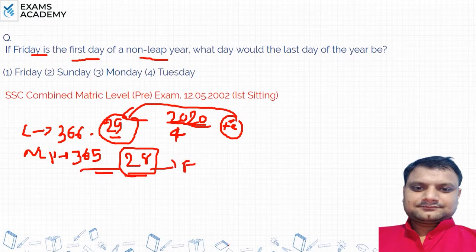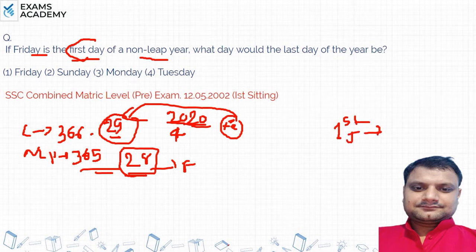Now, Friday is the first day — meaning January 1st is a Friday, and it is a non-leap year. Take for example 2021 or 2019. January 1st will be a Friday.